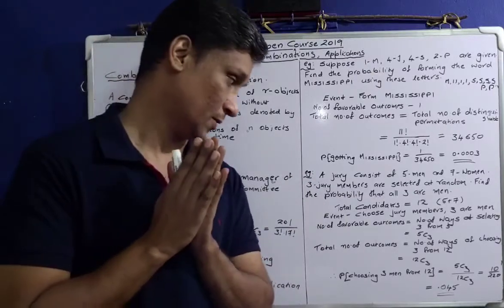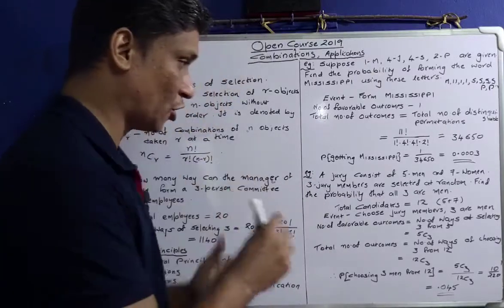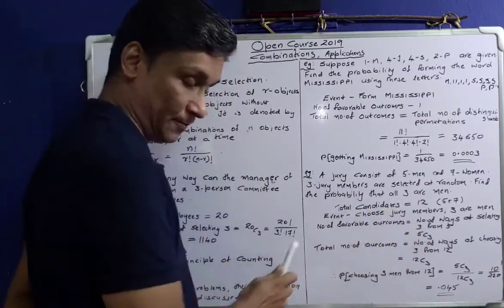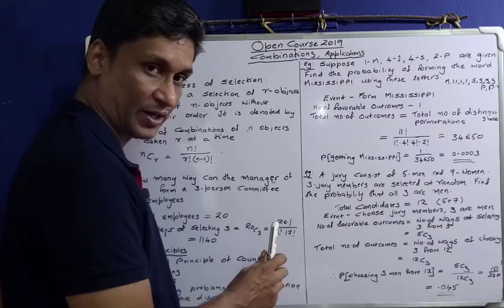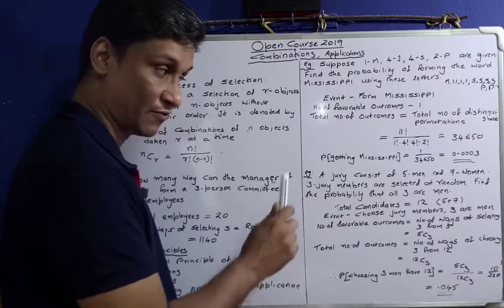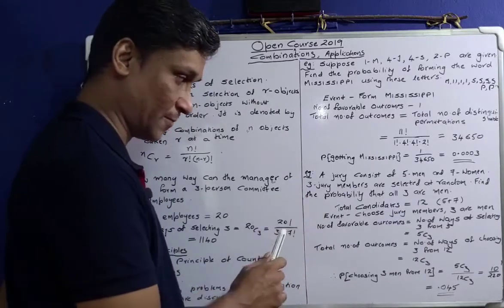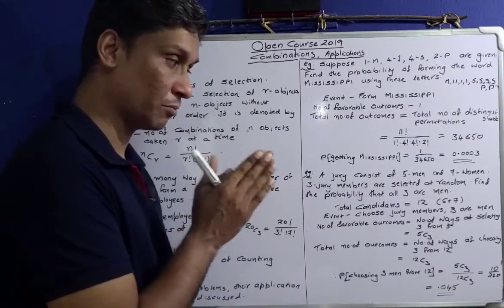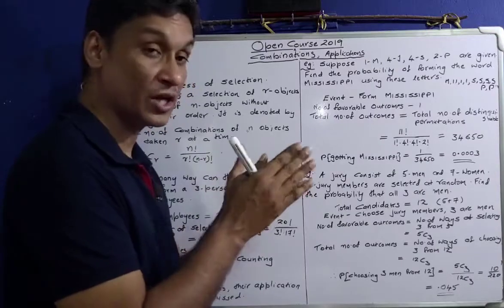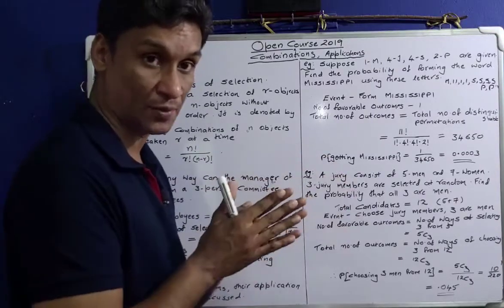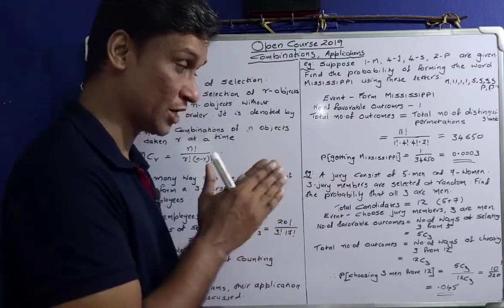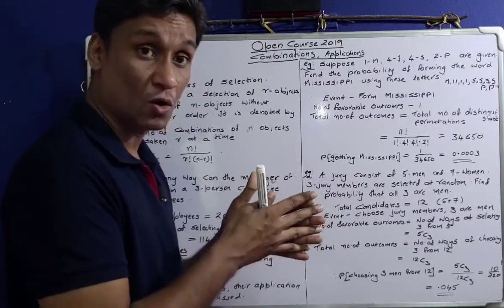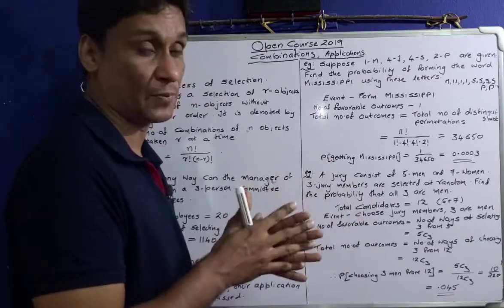Here the total number of candidates is 12. Even if you choose jury members, we want those in which all 3 are men.